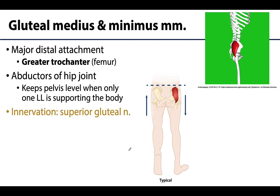Moving to the smaller gluteal muscles, the gluteus medius and minimus have similarly oriented muscle fibers and are often thought of as a group. Both attach distally on the greater trochanter of the femur. Because their fibers run in the same direction and share the same attachment, they share similar actions: medial rotation of the thigh and, importantly, abduction of the hip joint, sometimes referred to as overall stabilization of the hip.